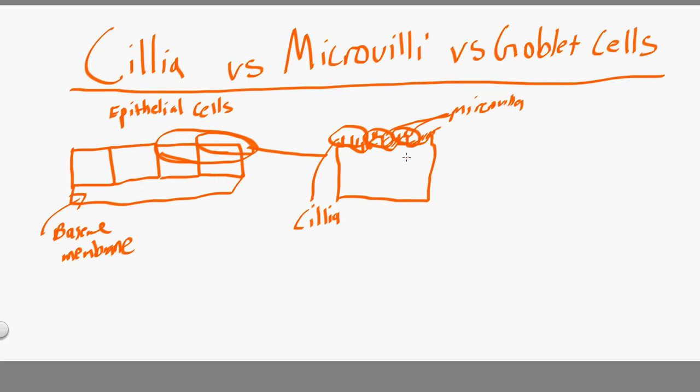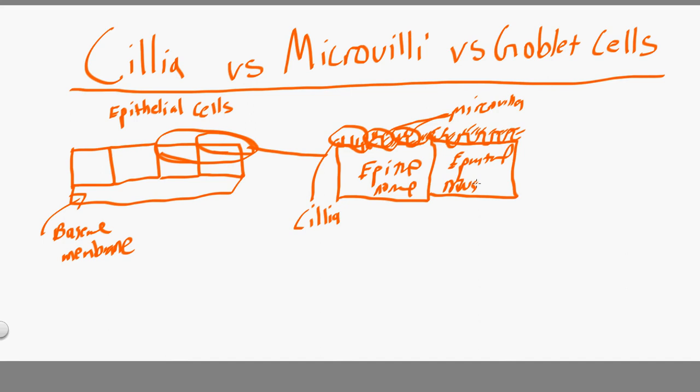The goblet cells also have the same structure — they're basically epithelial cells, so they still have the microvilli and the cilia. This cell here is a regular epithelial cell. The goblet cell is also an epithelial cell, but the difference is that it secretes mucus. So if this one is secreting mucus, this one is a goblet cell.